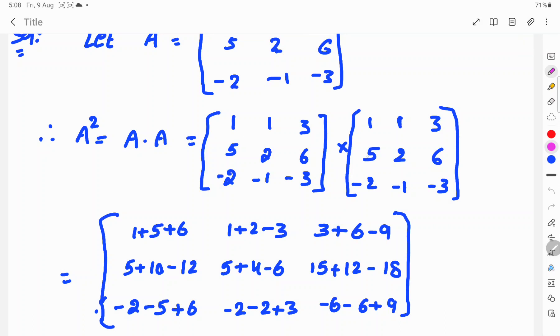So, 1 into 1, 1 plus 1 into 5, 5 plus 1 into 2, 1, 3 is 3. So, first this column into this row. So, and next one, this column, this row. So, 1 into 2, 1 plus...